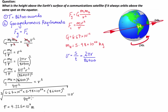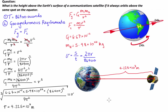This number represents the distance from the centre of mass of the Earth to the centre of mass of the satellite. But the question asks for the height above the Earth's surface. So we must subtract the radius of the Earth — the distance from the Earth's centre to its surface. The radius of the Earth is 6.38 times 10 to the 6 meters.